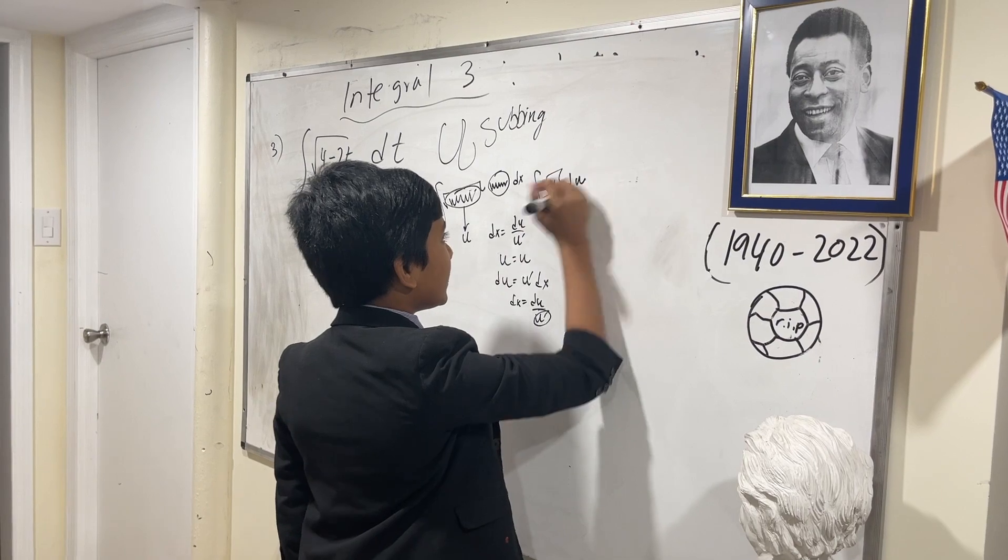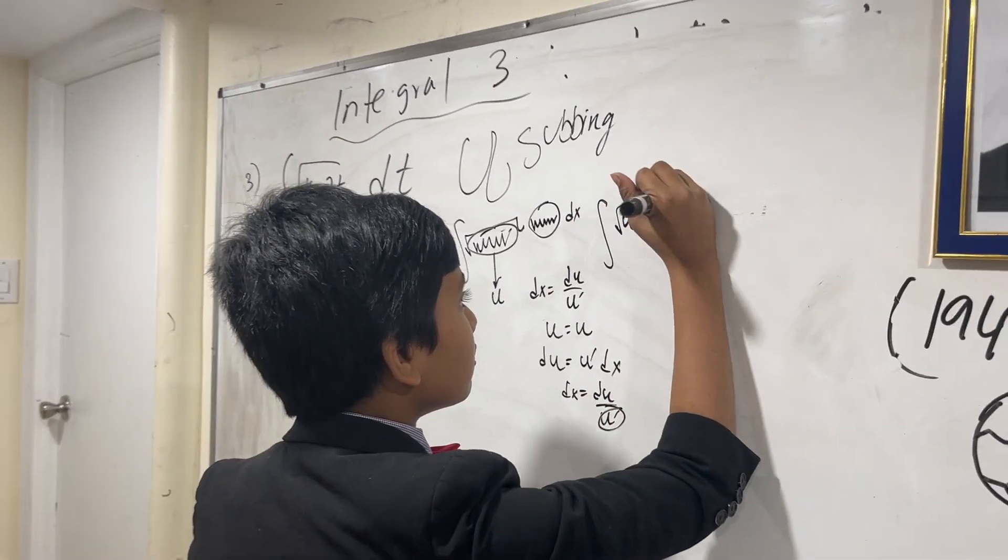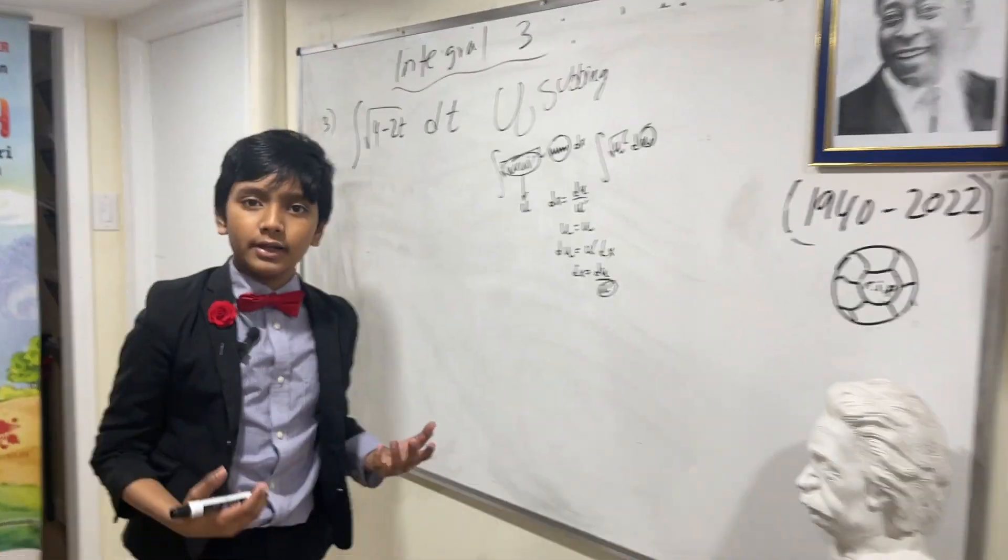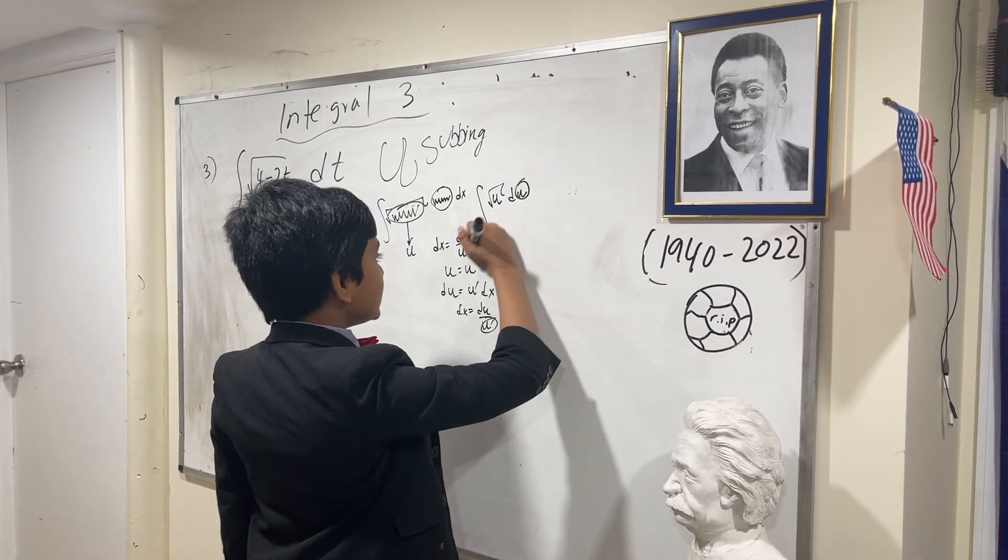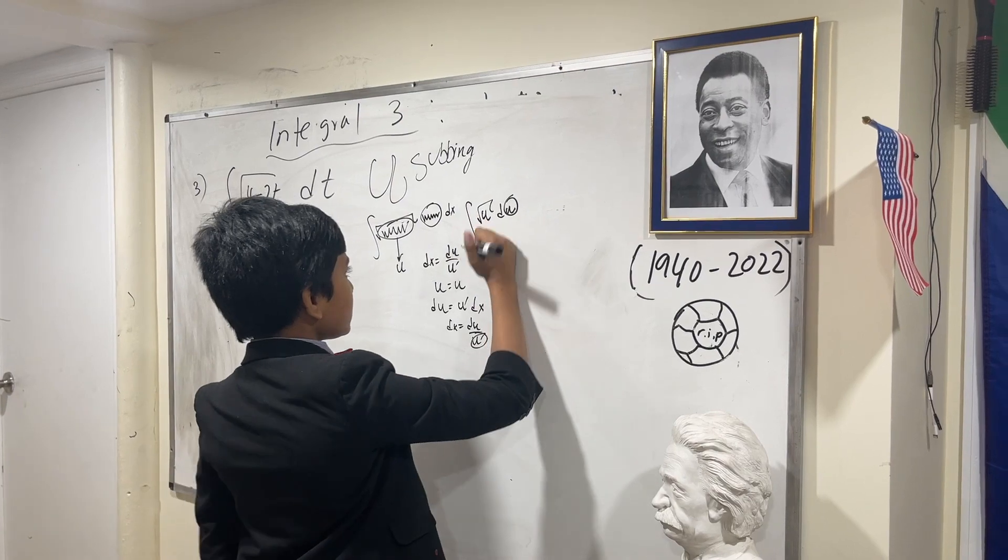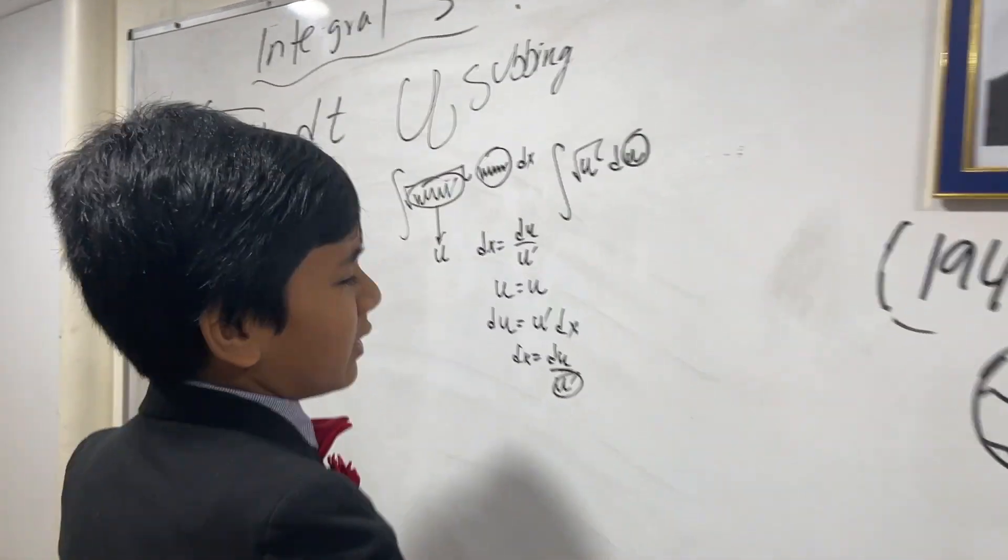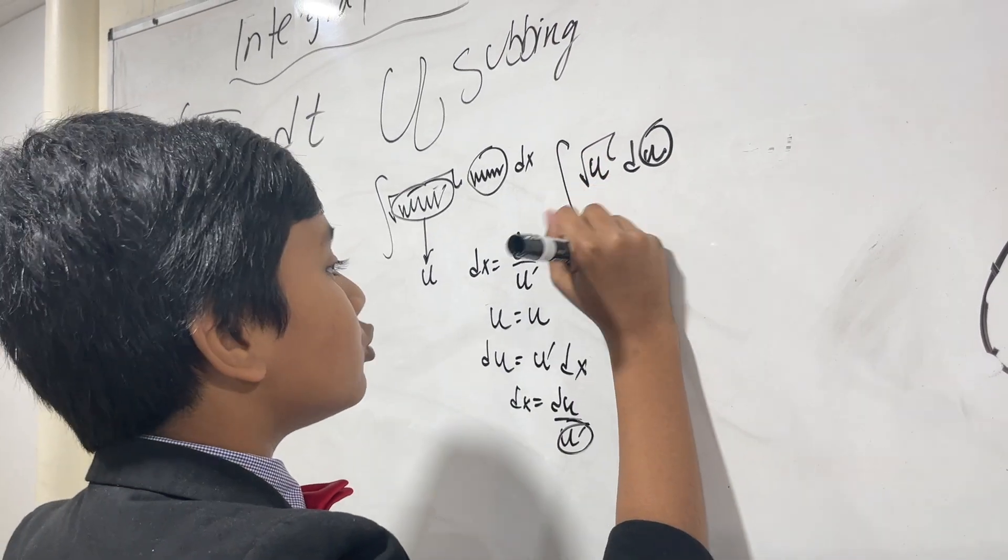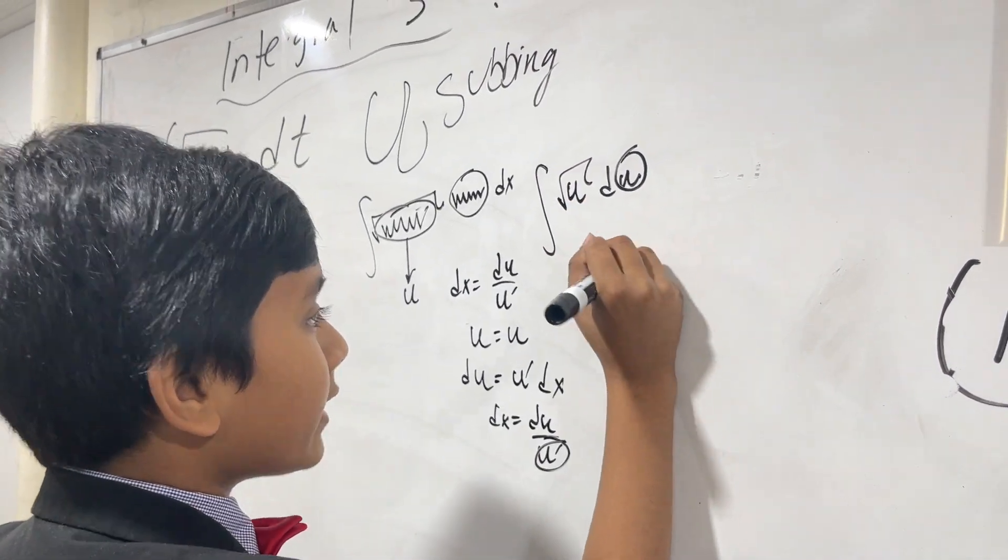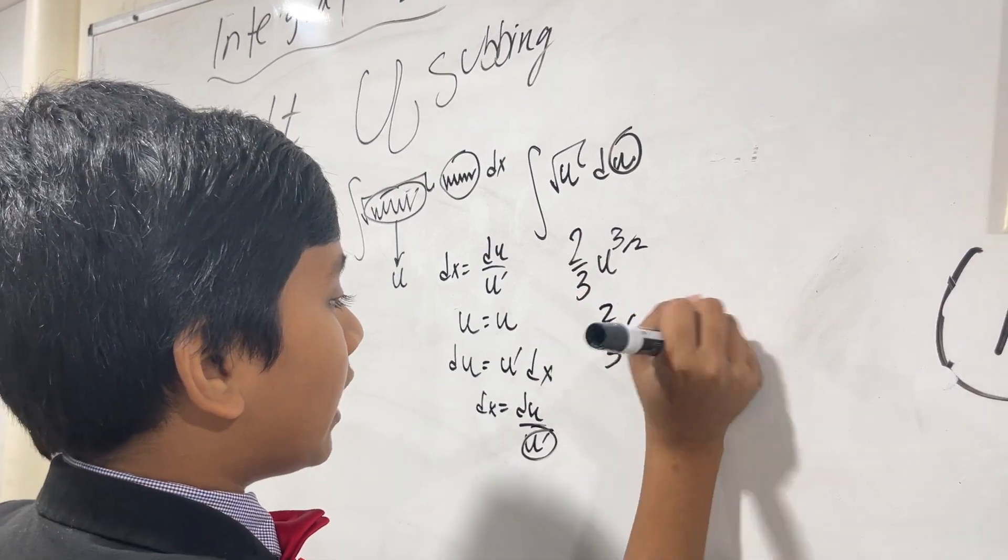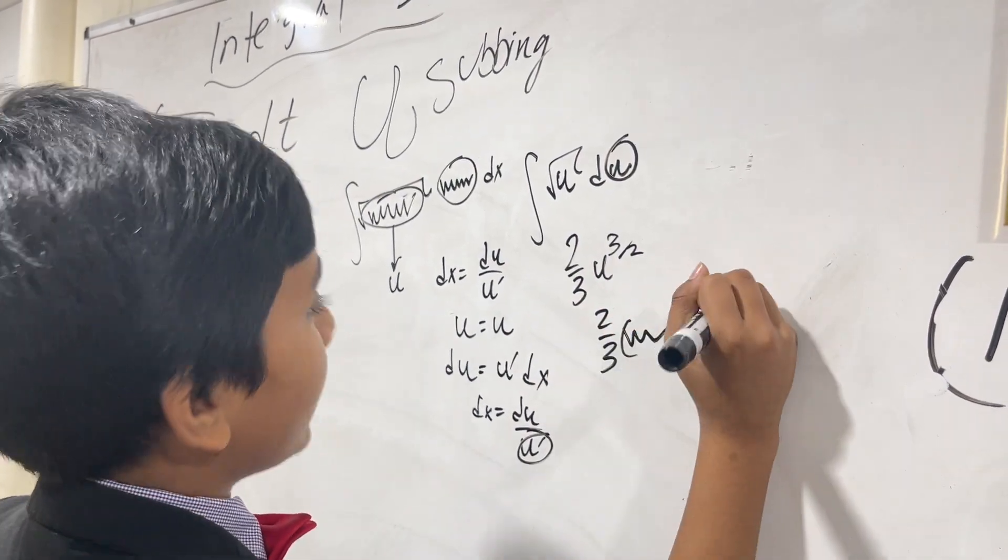So you can differentiate it like a normal variable now because you're doing it with respect to something different, u itself. So when all is said and done, taking the integral of u to the one-half, actually I shouldn't be forgetting this, this would be two-thirds u to the three-halves. And then all you gotta do is unsub the u, and that's it.